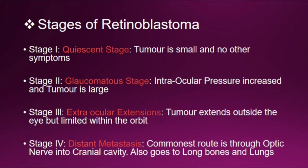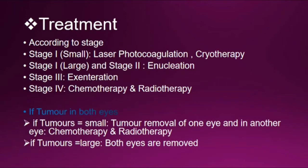Stage 3 — extraocular extension: tumor extends outside the eye but is limited within the orbit. Stage 4 — distant metastasis: the commonest route is through the optic nerve into the cranial cavity; it also spreads to long bones and lungs.